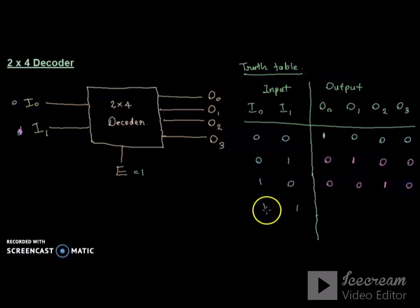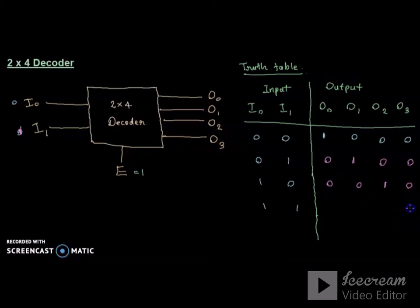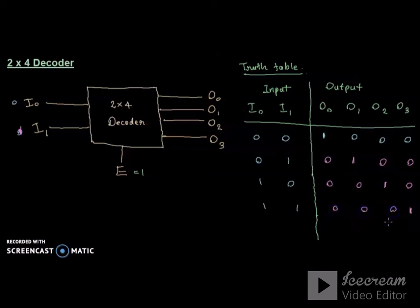In the same way, when both inputs are 1 (binary 11), O3 is 1 and the rest of the outputs are 0.